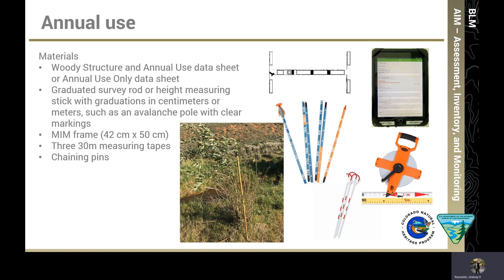In order to conduct these methods, the following materials are required. First, you need the woody structure and annual use data sheet if data are being collected on a full AIM plot effort, or the annual use only data sheet if the visit is to collect only annual use data. You will need a graduated survey rod or height measuring stick with graduations in 15 cm or meters, such as an avalanche pole with clear markings. You will need a MIM frame, which is 50 cm long by 42 cm wide. You will also need three 30-meter measuring tapes and chaining pins to secure the transects.